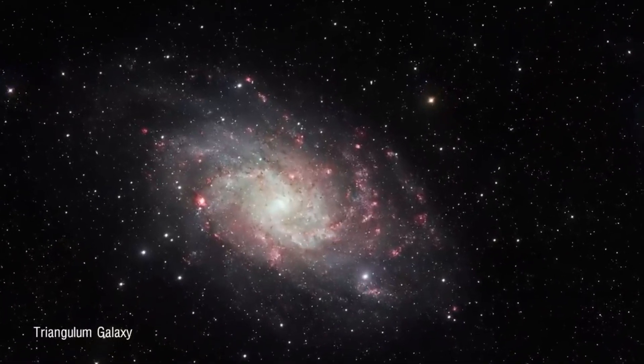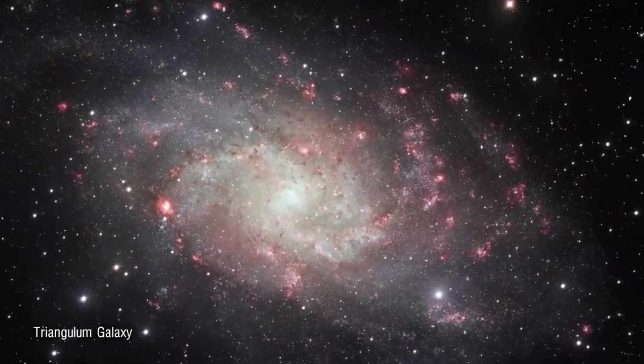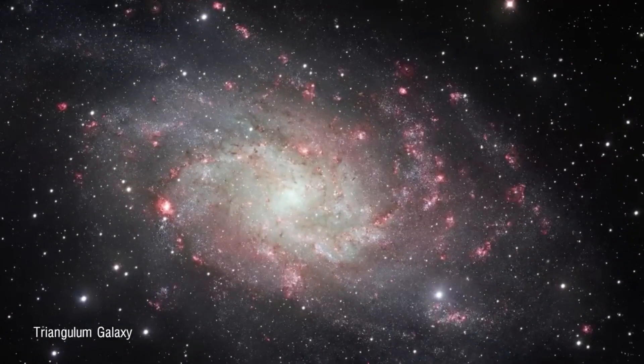Specifically, the supermassive black hole in Phoenix A is twice as massive as the Triangulum Spiral Galaxy in our local group, which spans over 60,000 light-years and contains over 40 billion stars.